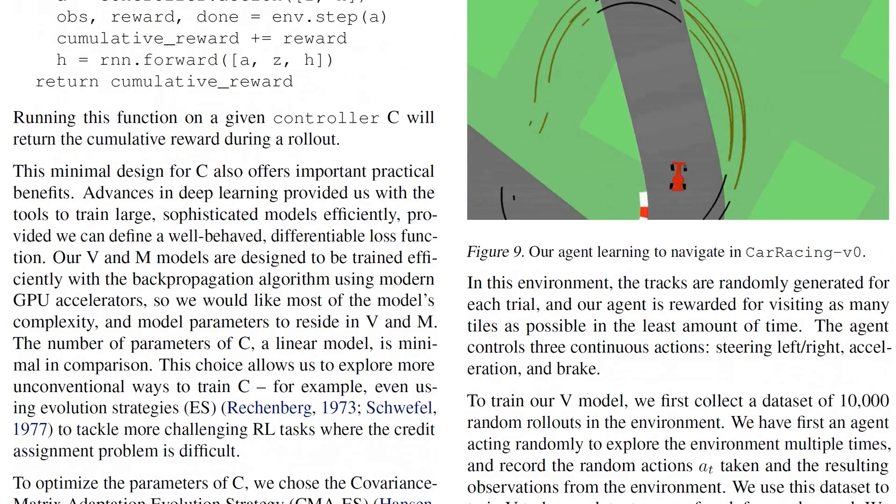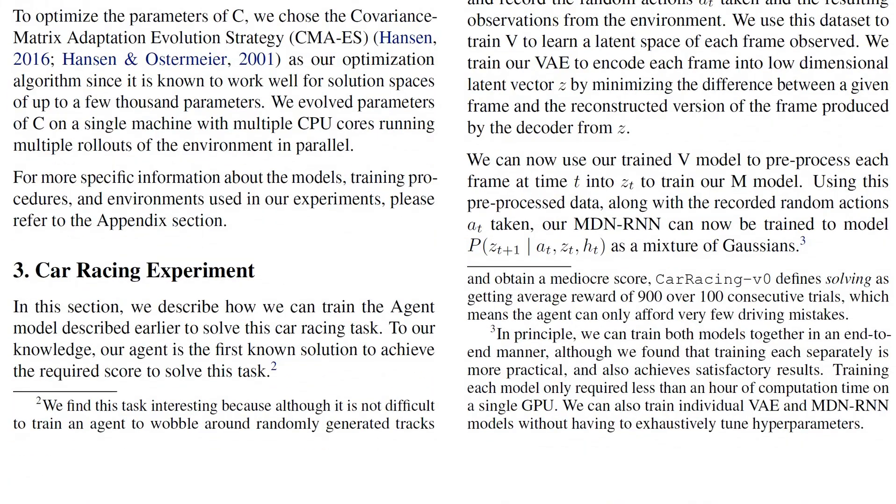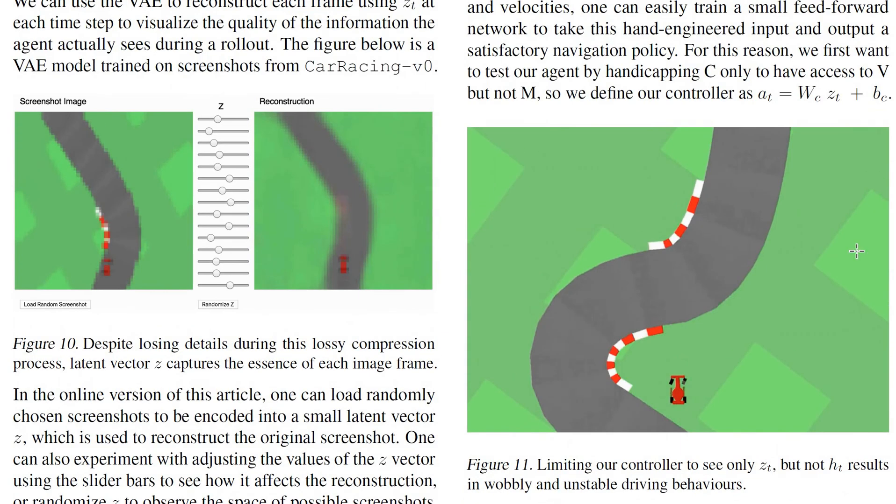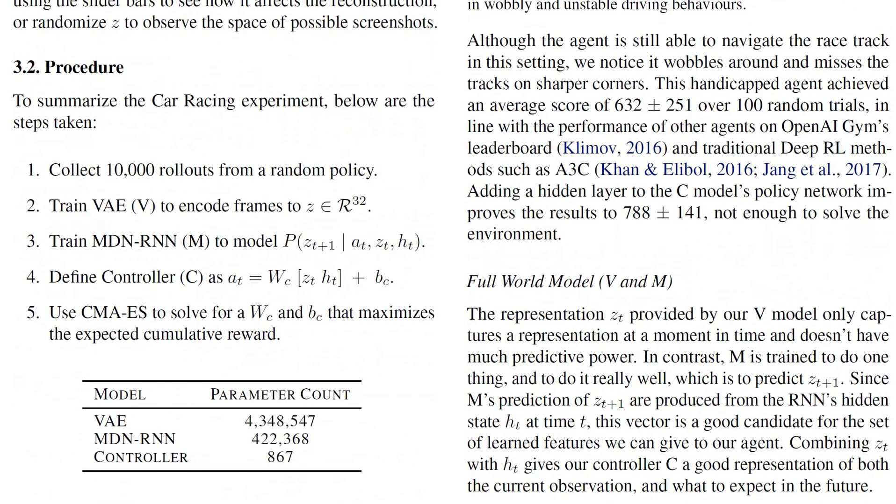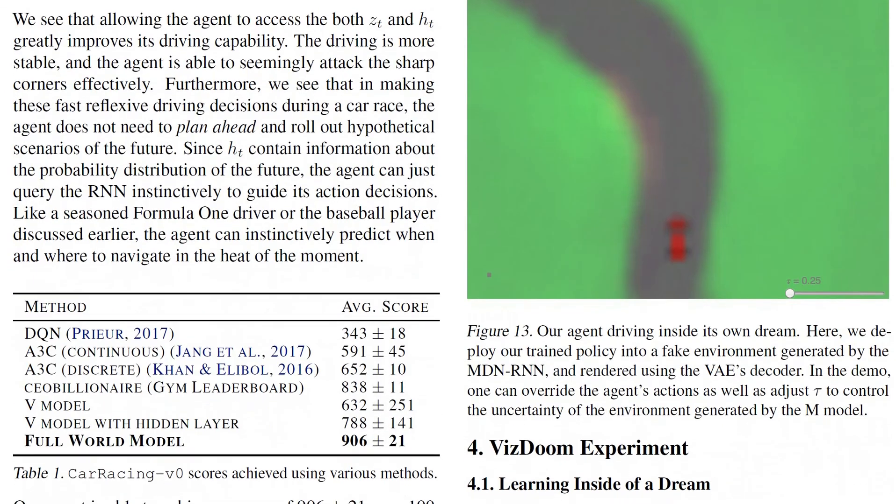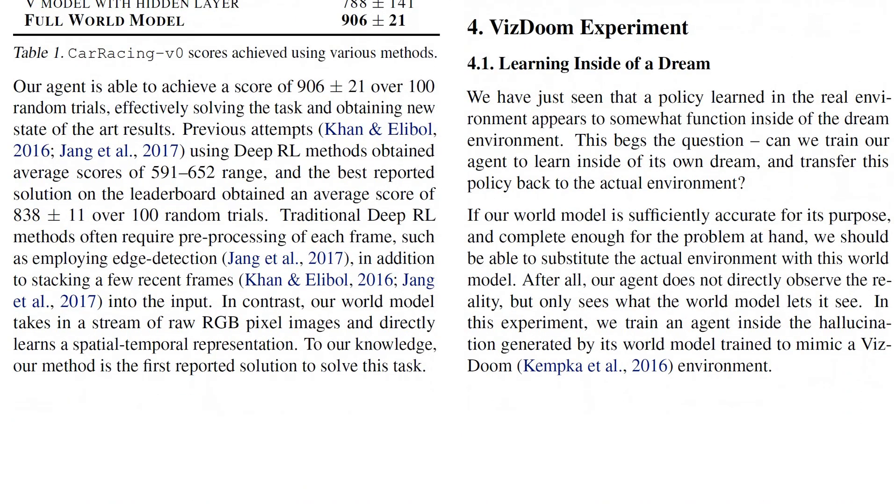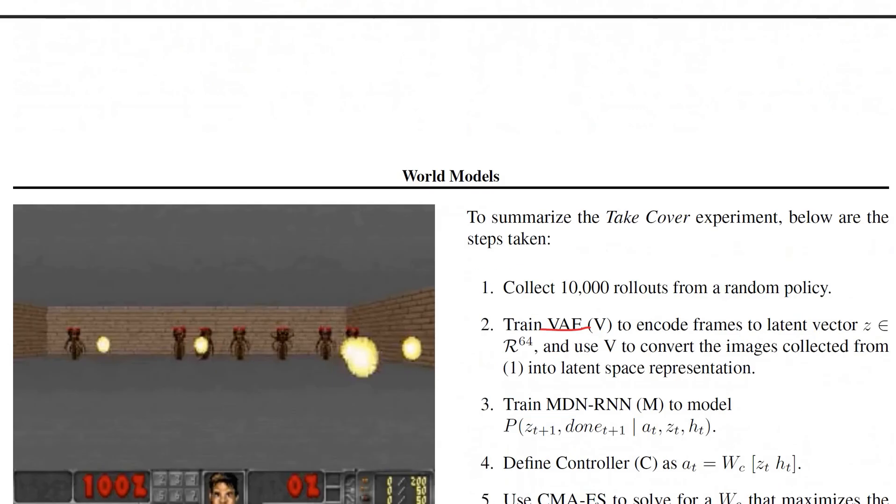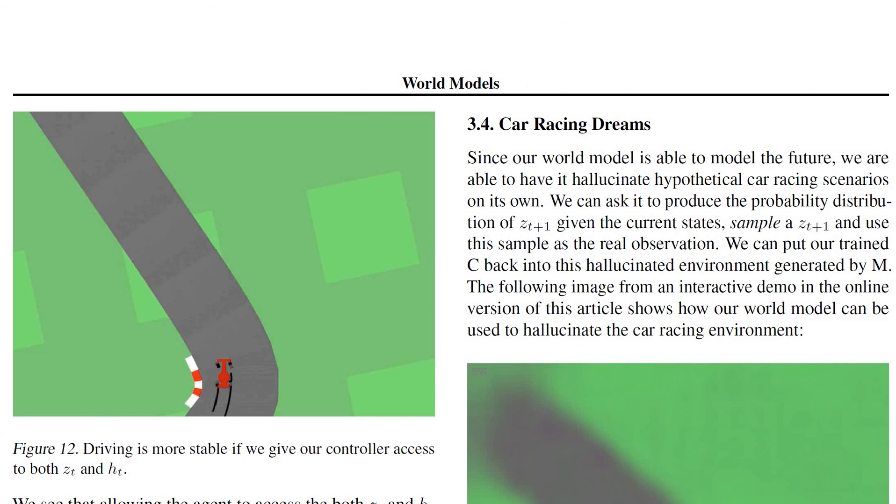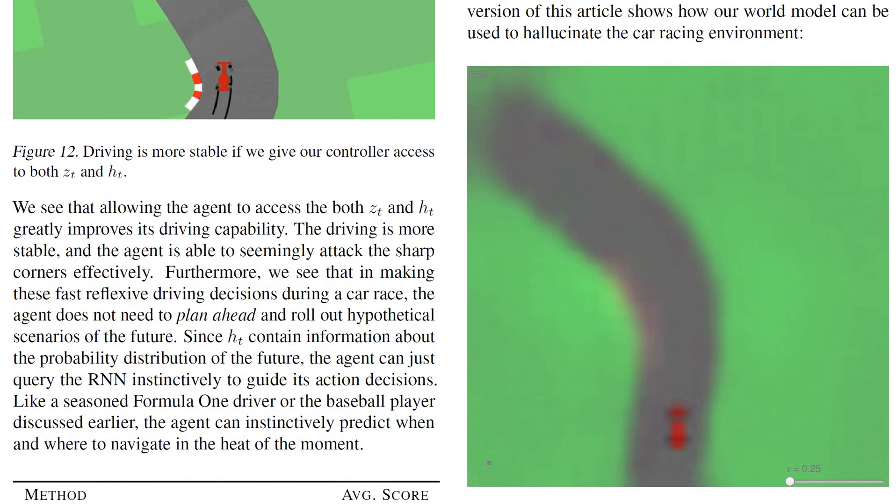So they have a bit of pseudocode here. And they do a bunch of experiments. They say, our compression works. And this is the real frame. And this is the reconstructed frame. So it kind of looks, you know, captures the essence of what's going on. And I actually want to go down here to the VizDoom experiment. So what they do here in the car racing experiment is they learn this entire thing, and then they learn a policy in the real world.